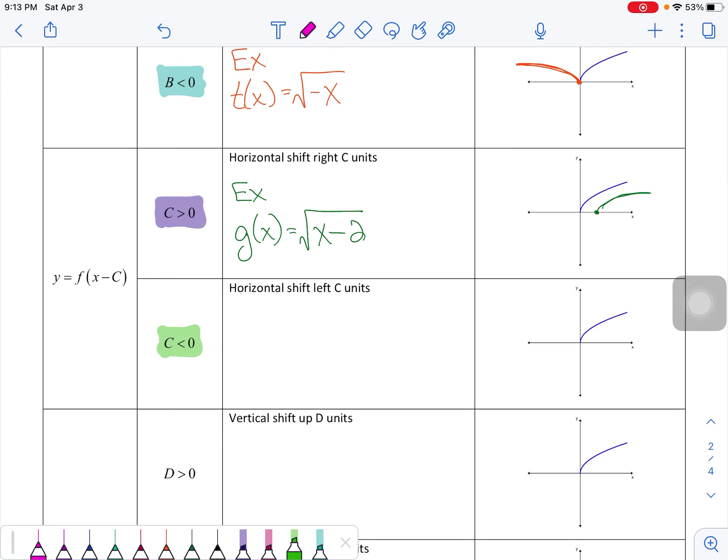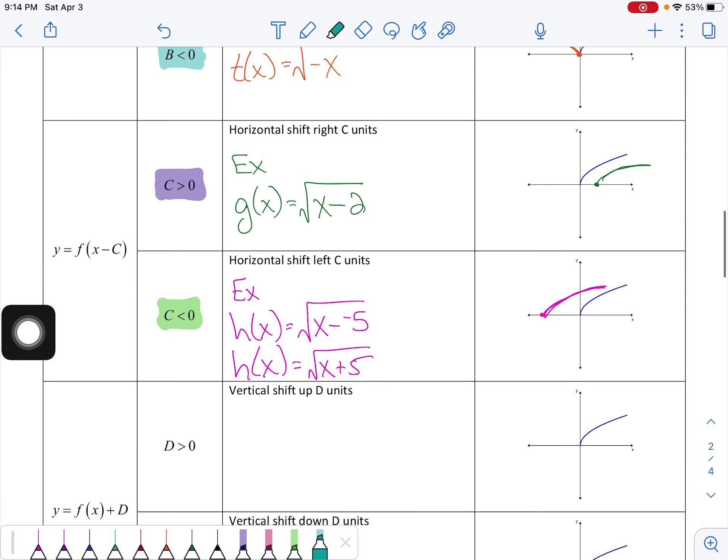If your c value is negative, for example let's say I do h of x is equal to, I'm going to write it kind of weird the first time because our notation here says x minus c, so I'm going to do x minus and then I'm going to make c negative, negative 5. Now mathematically we don't normally write this as minus and negative 5. We're kind of lazy and just say that's the same thing as x plus 5. If we have the example of x plus 5, this is actually going to shift our graph to the left 5 units.